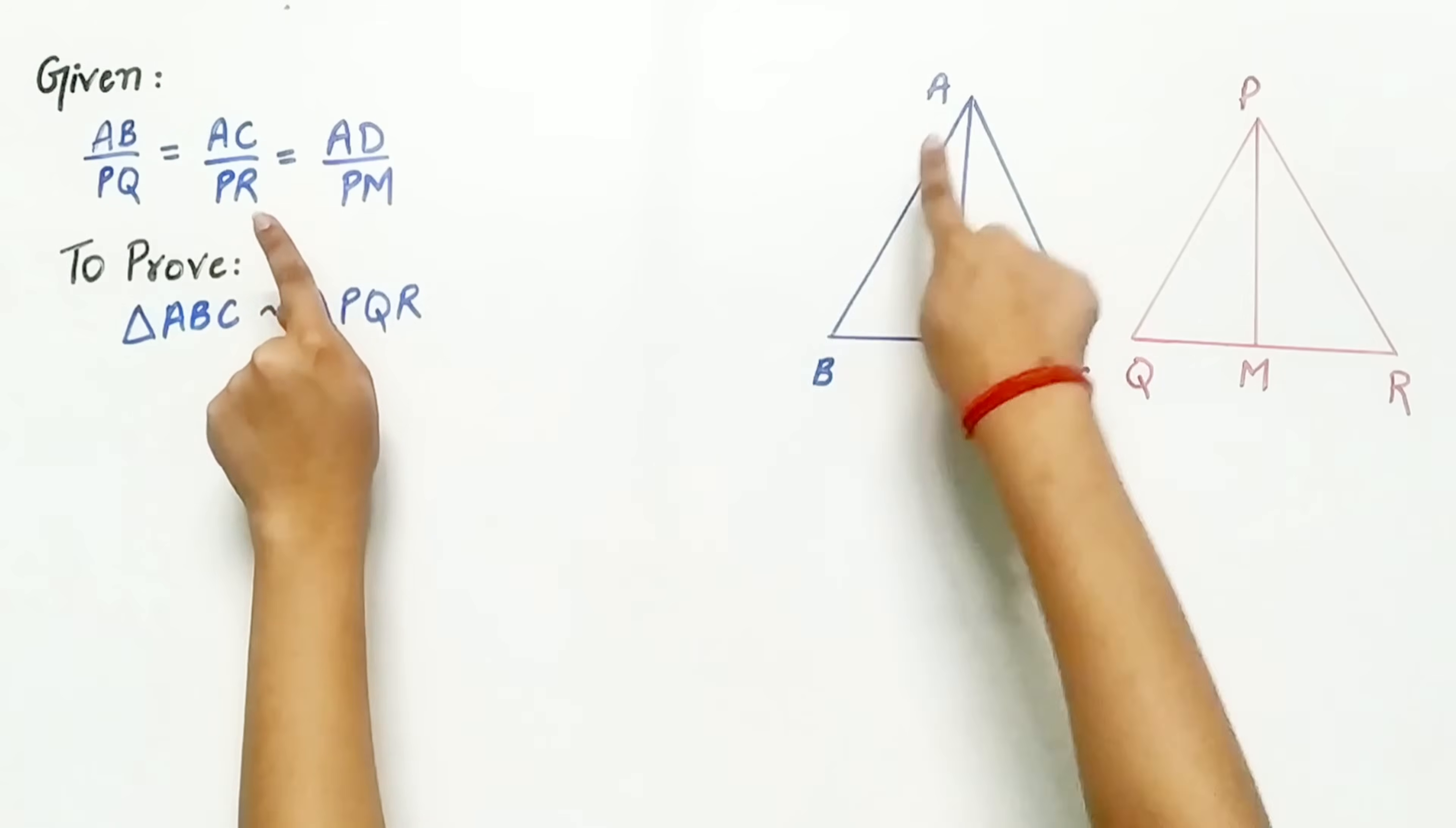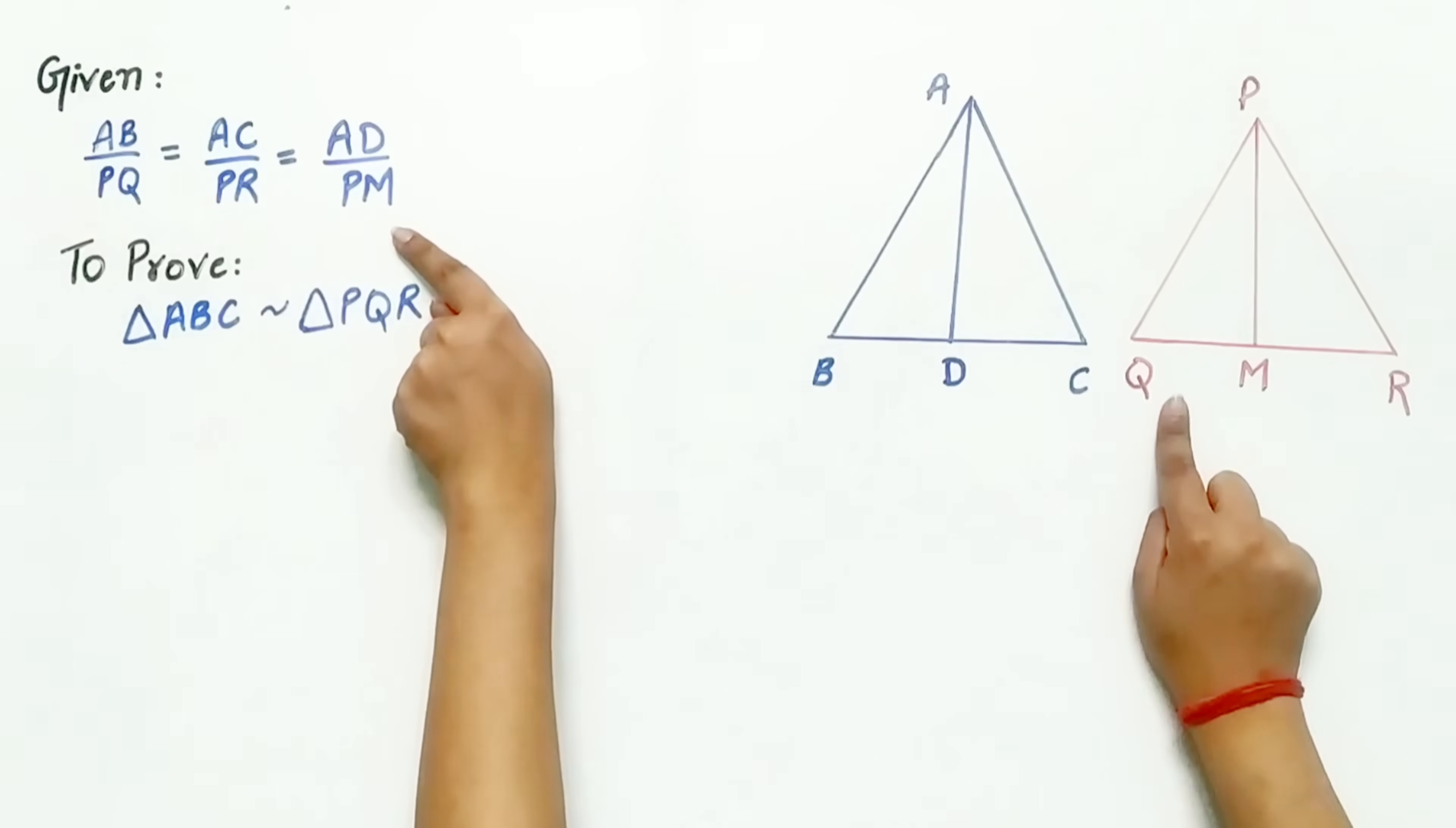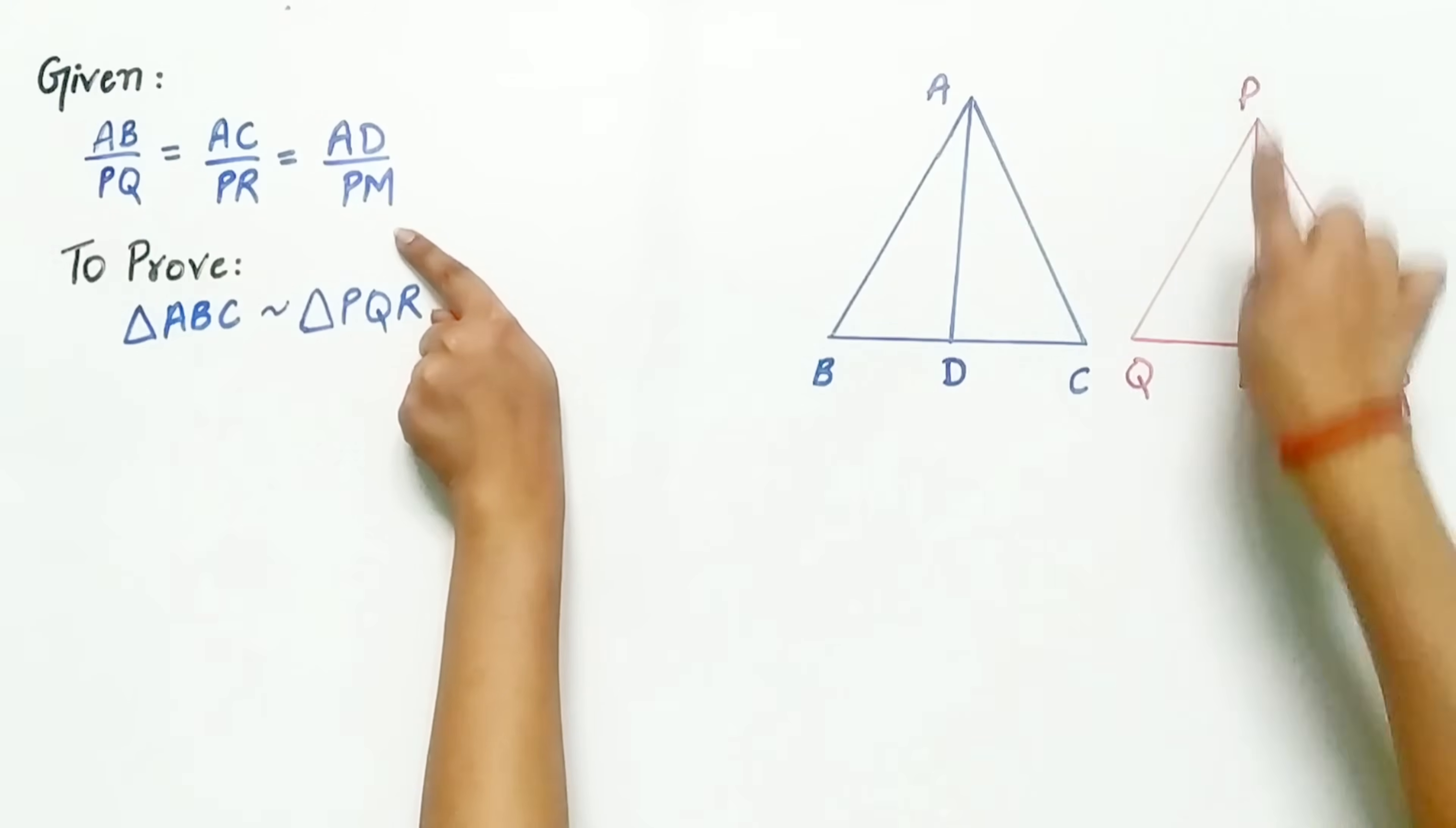So it's given to us that AB by PQ is equal to AC by PR is equal to AD by PM.